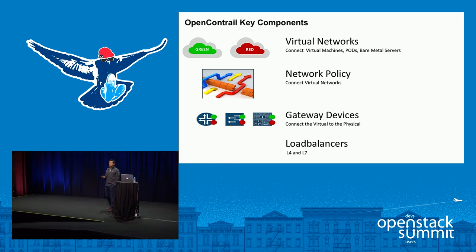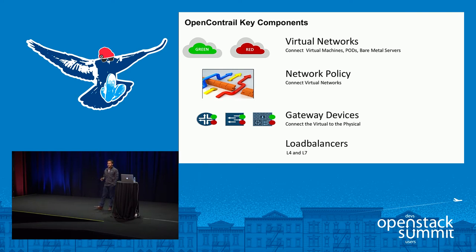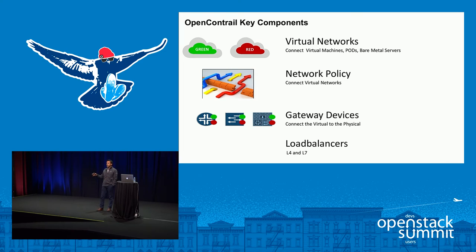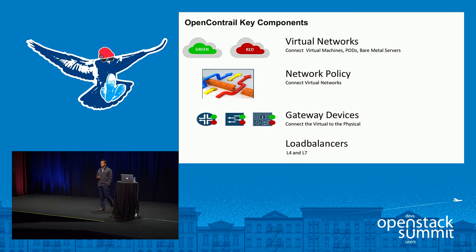Let me start with just the key components of OpenContrail, which most of you must be familiar with. We have the notion of virtual networks — in this example, red and green — which are two isolated domains. Any workload launched in each of these domains cannot talk to each other unless you create a policy connecting the networks. Once you connect them based on a protocol and port, you can even insert a service, such as a firewall — provided by a virtual machine or a container-based firewall — between the green and red networks. This network policy is an abstraction that allows for connectivity between virtual networks.